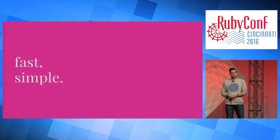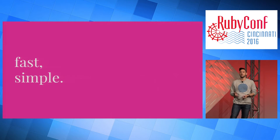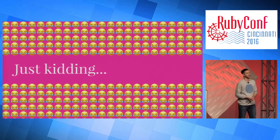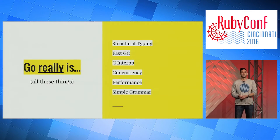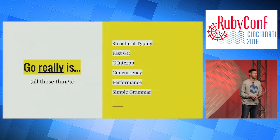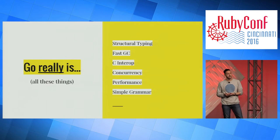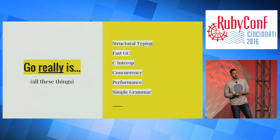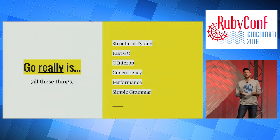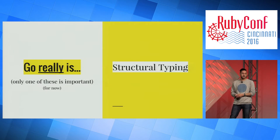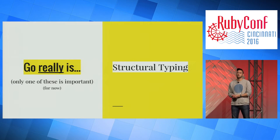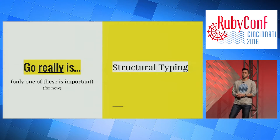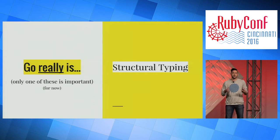Go is fast and simple — we know it as this simple language that is also as fast as C. But there's more to Go than just that. Go actually has structural typing, a really fast garbage collector, interoperability with C so you can write systems-level programming, a really good concurrency story, fast performance, and a very simple grammar. The key thing to really understand about Go, in my opinion, is the structural typing portion.